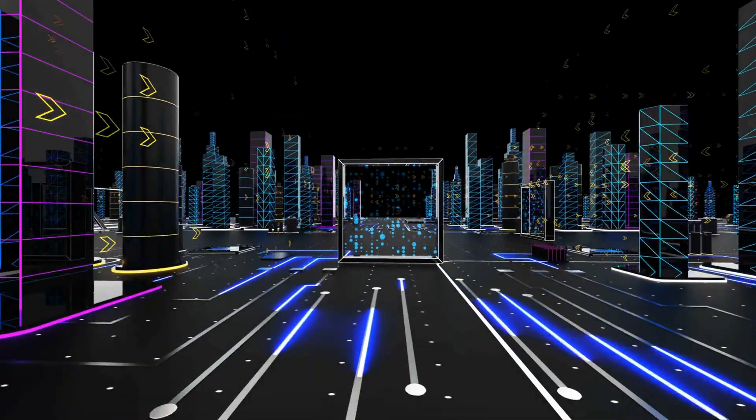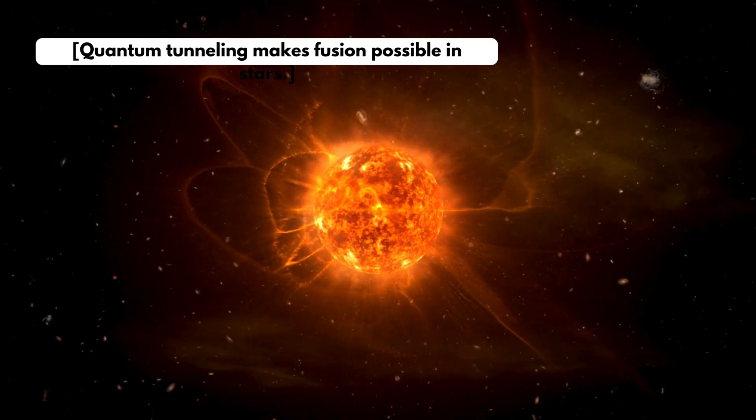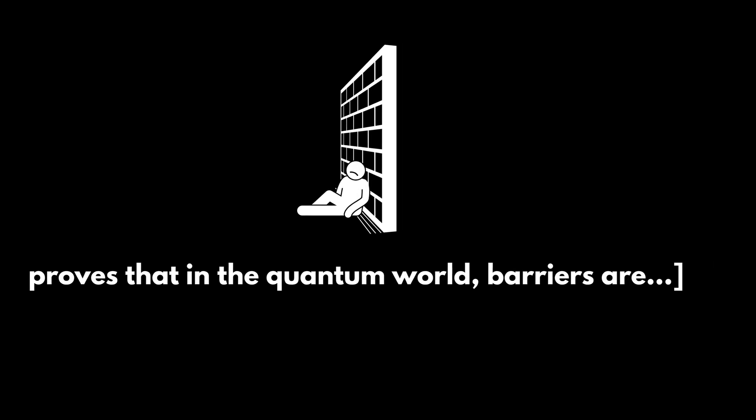Imagine walking into a wall and occasionally just phasing through it. In quantum mechanics, that's not absurd. It's expected. Quantum tunneling makes fusion possible in stars. It's also what powers technologies like flash memory and STM microscopes. It proves that in the quantum world, barriers are suggestions.